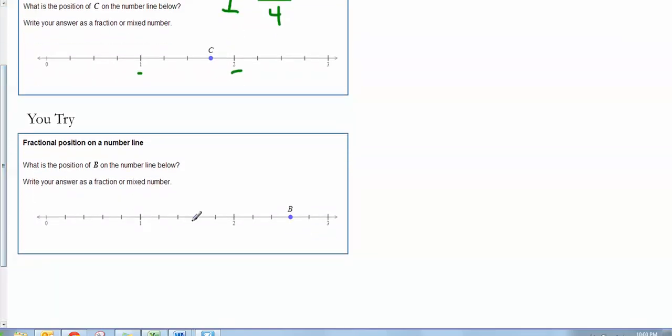So go ahead and give the video a pause and I want you to try to find the mixed number for B. Thirteen-fifths or two and three-fifths, whichever one you prefer, because it says fraction or mixed number, and this is a fraction. So either one of those answers works.